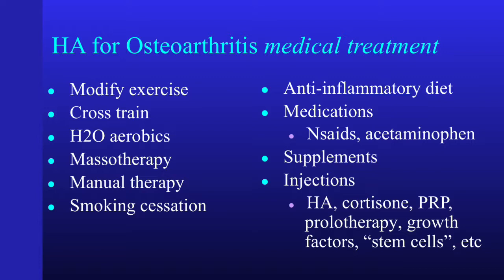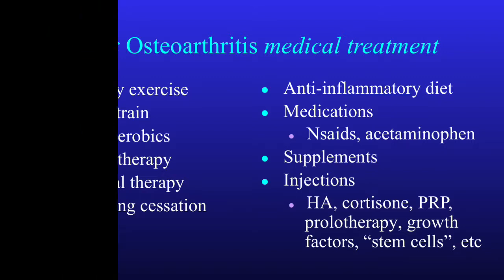We have lots of things that we can inject for osteoarthritis, though some are only indicated for certain conditions. Cortisone injections can give people temporary relief, and we also talk about growth factor injections such as PRP, stem cell injections, and hyaluronic acid injections. I want to spend the next few minutes talking about hyaluronic acid and how it works from a musculoskeletal standpoint.